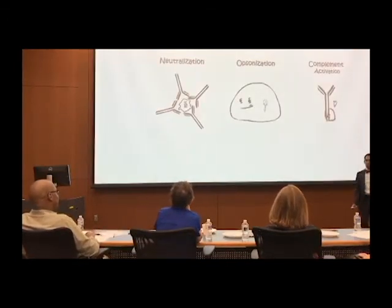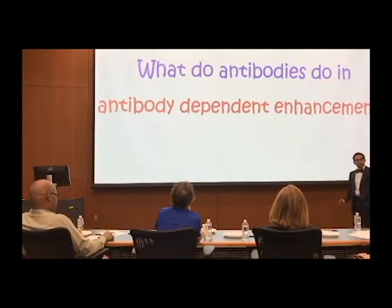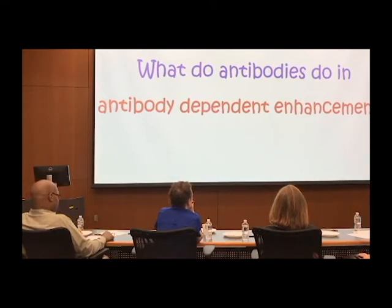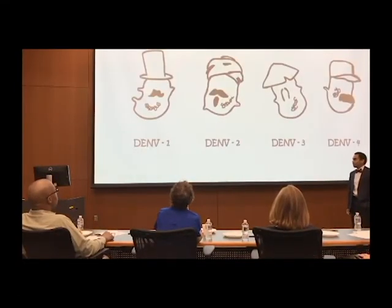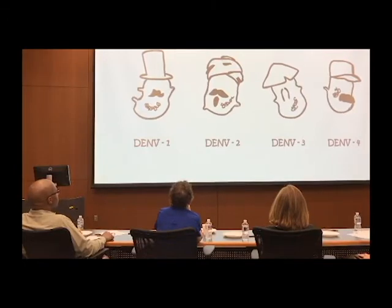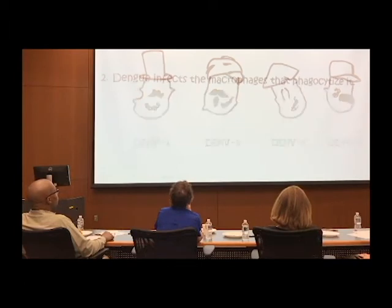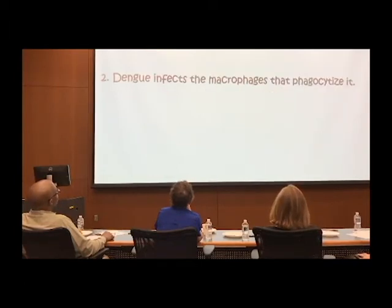Those are the three things the antibody normally does. Now let's see what antibodies do differently in antibody-dependent enhancement of infection — where antibodies actually make the infection worse. The first reason is that Dengue comes in different serotypes. You can identify Dengue because it likes to wear hats, but each serotype wears a different kind of hat. The second reason is that Dengue infects the very macrophages that are supposed to destroy it.